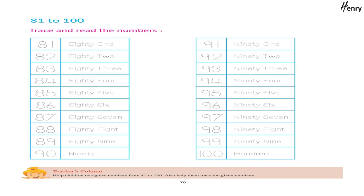81 to 100 — Trace and read the numbers: 91, 92, 93, 94, 95, 96, 97, 98, 99, 100.